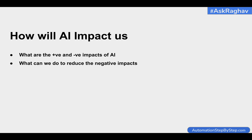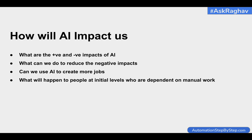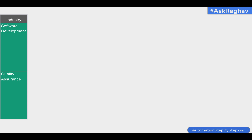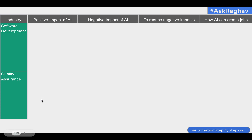What is the impact for us? What are the positives and negatives of artificial intelligence? How can we reduce or curb the negative impacts of AI? Can we actually use AI to create more jobs, and what will happen to people at the very initial level who are more dependent on manual jobs? I have created a chart here covering the software development and quality assurance and testing industry, with parameters for positive impact, negative impact, what we can do to reduce negative impacts, and how AI can create more jobs.